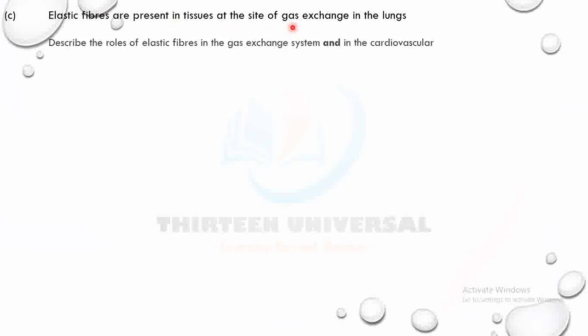Elastic fibers are present in tissues at the site of gas exchange. Describe the role of elastic fibers in the gas exchange system and in the cardiovascular system. In the gas exchange system, elastic fibers prevent overstretching or bursting of the alveoli. In blood vessels, they also stretch to prevent bursting as blood pressure increases.